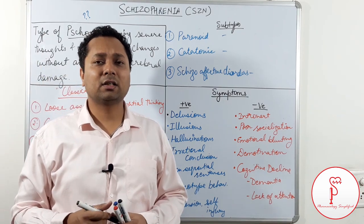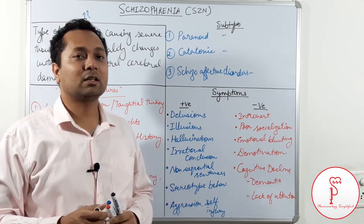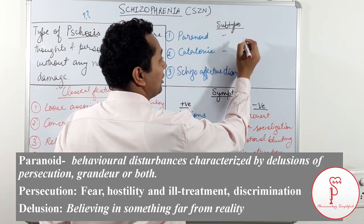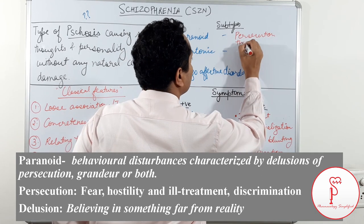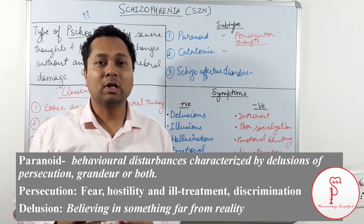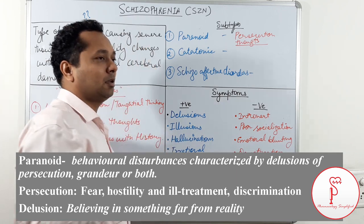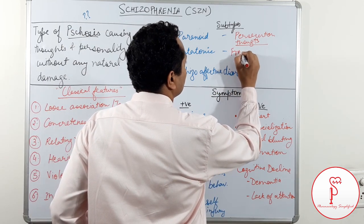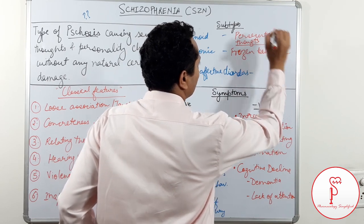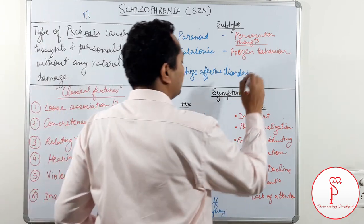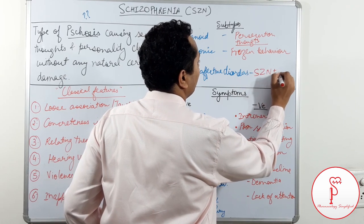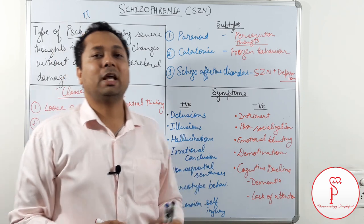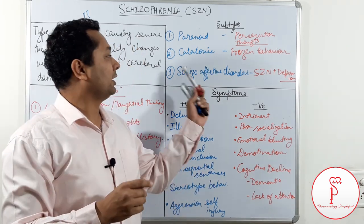Different texts categorize schizophrenia in different ways, but there are three major subtypes. The first is paranoid schizophrenia, in which the individual has thoughts of persecution. The second is catatonic, where the individual freezes for a very long period of time and shows no responses. The third is schizoaffective disorder, which is a combination of schizophrenia plus depression.